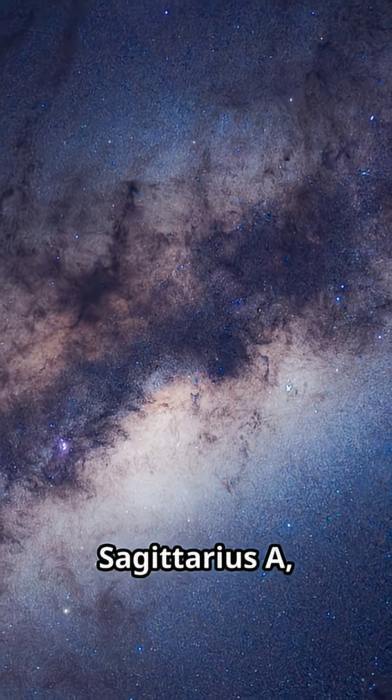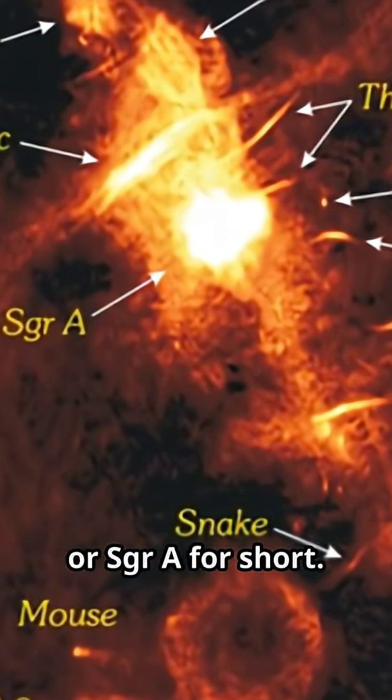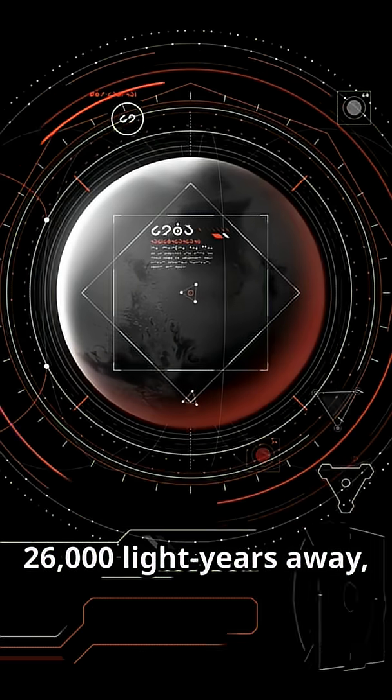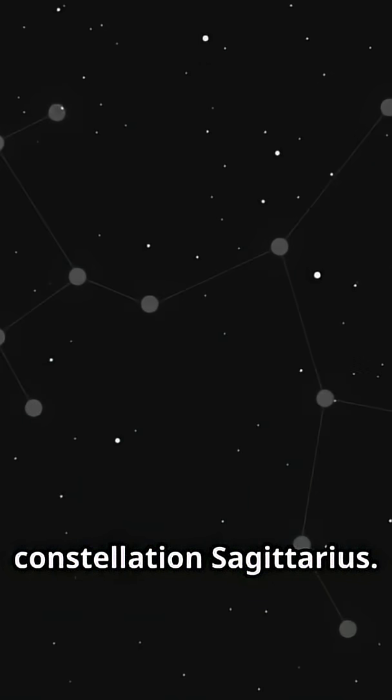It's called Sagittarius A or Sgr A for short. 26,000 light-years away in the constellation Sagittarius.